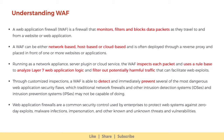Running as a network appliance, server plugin, or cloud service, the WAF inspects each packet and uses a rule base to analyze Layer 7 web application logic and filter out potentially harmful traffic that can facilitate web exploits. Through customized inspections, a WAF is able to detect and immediately prevent several of the most dangerous web application security flaws, which traditional network firewalls and other intrusion detection systems and intrusion prevention systems may not be capable of doing. Web Application Firewalls are a common security control used by enterprises to protect web systems against zero-day exploits, malware infections, impersonation, and other known and unknown threats and vulnerabilities.